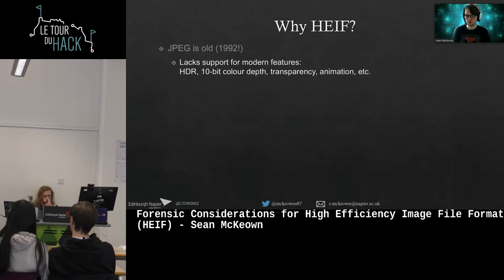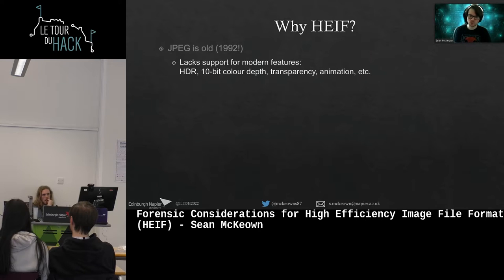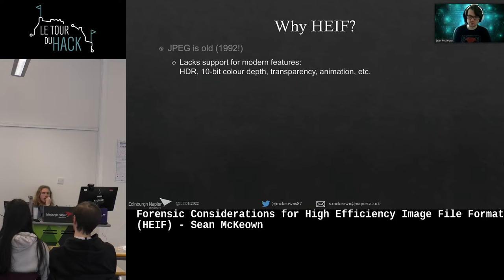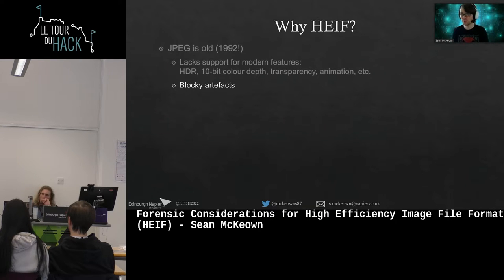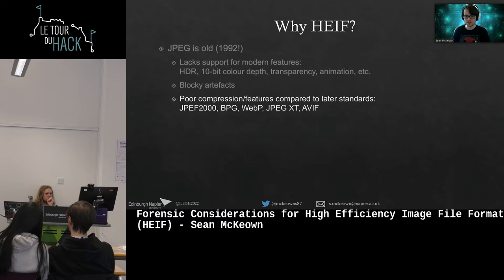Fundamentally, JPEG is lacking support for modern things. HDR wasn't really considered back then and hasn't been bolted on since. We've only got 8-bit colour depth, no transparency — if you've ever tried to make a transparent image you have to use PNG — and no animation support; you need APNG or GIF for that. When you compare JPEG to more modern formats it doesn't really hold up, either in compression, artefacts, or feature support.